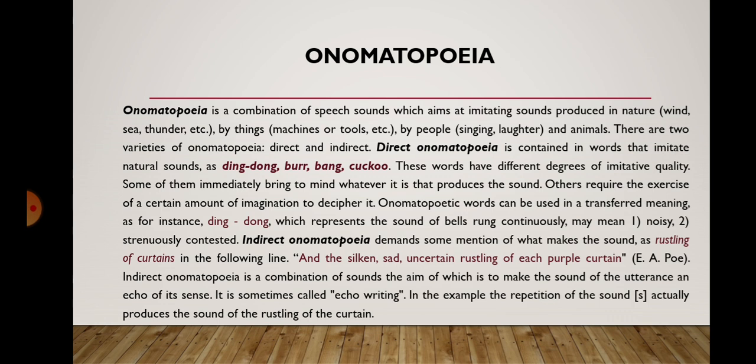Indirect onomatopoeia demands some mention of what makes the sound. For example, consider the rustling of curtains in the following line from Edgar Poe's work: 'And the silken sad uncertain rustling of each purple curtain.' Indirect onomatopoeia is a combination of sounds the aim of which is to make the sound of the utterance an echo of its sense — it is sometimes called echo writing. In this example, the repetition of the sound actually produces the sound of the rustling of the curtain.